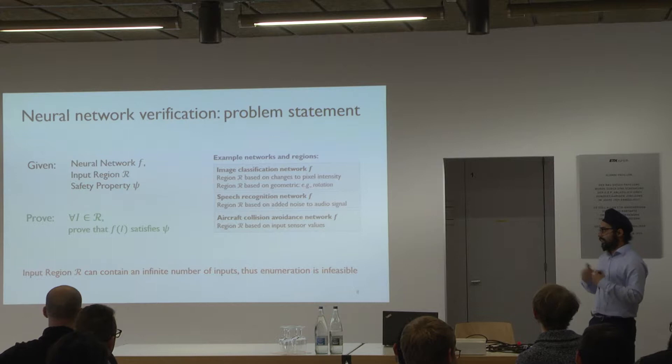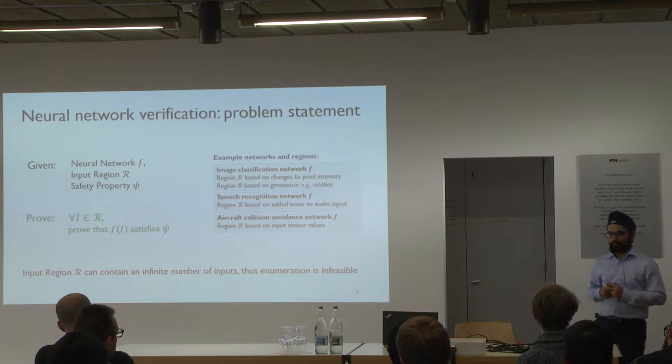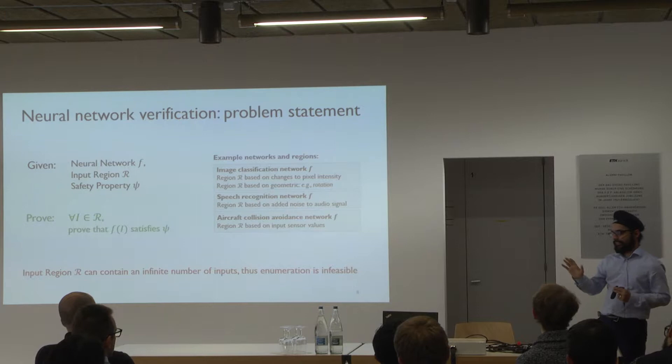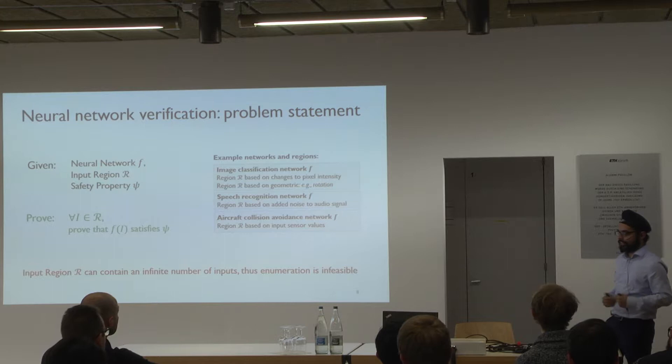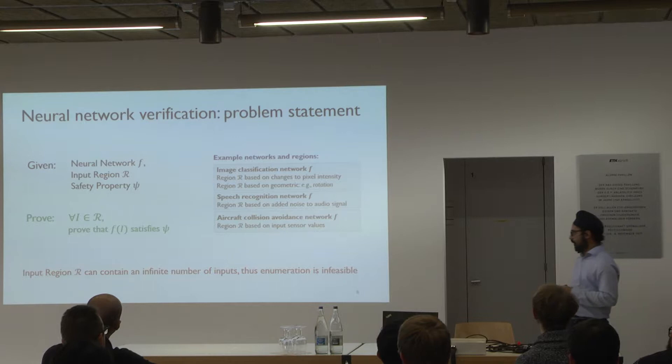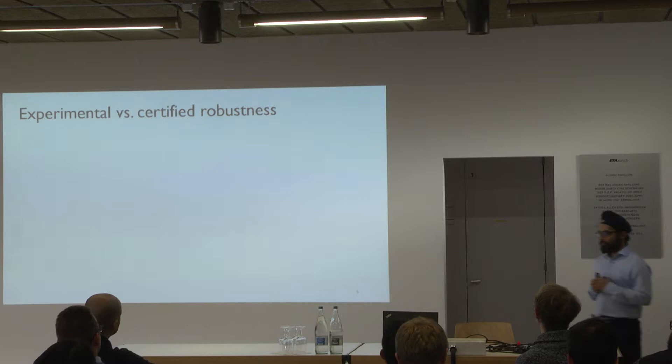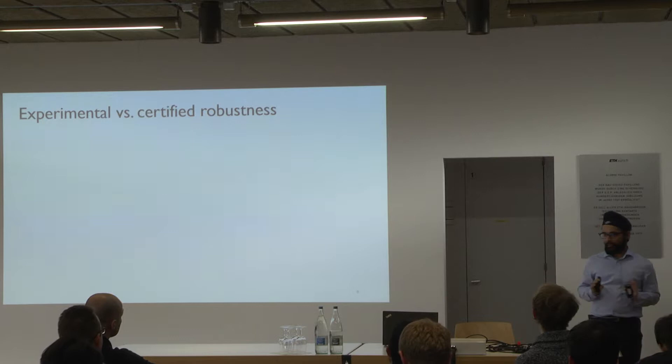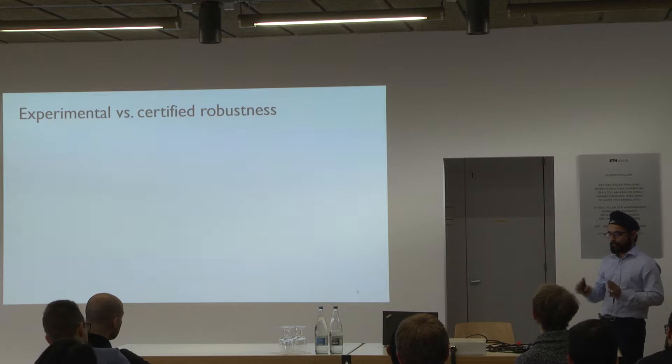The problem is that the input region can contain a huge number of points. For a CIFAR-10 image with 3,072 pixels, if you consider just two values per pixel, you get 2 to the power of 3,000 possible images. Enumerating all of these one by one to check correctness would take an infeasibly long time.